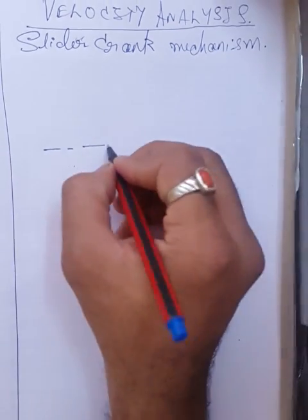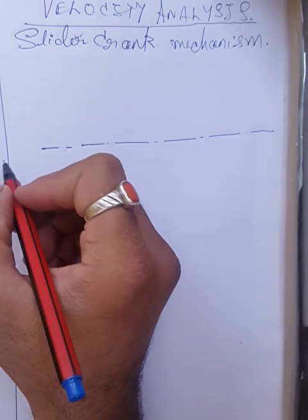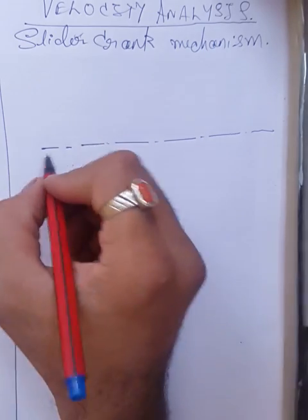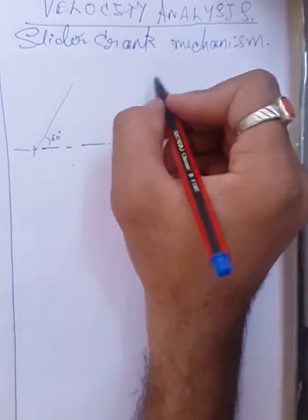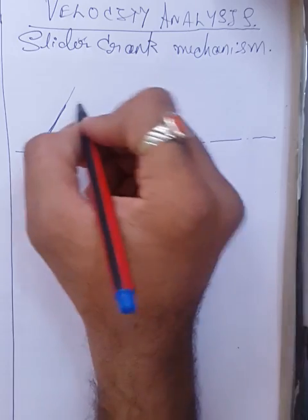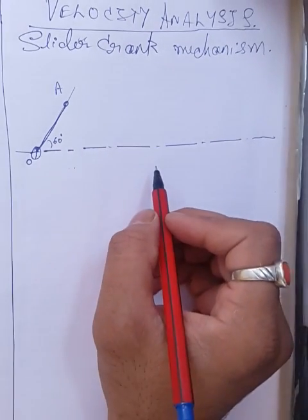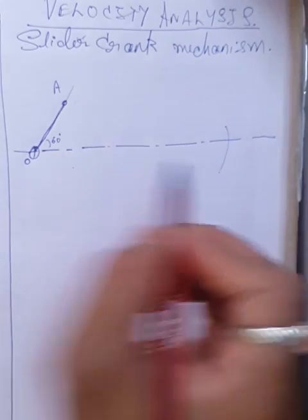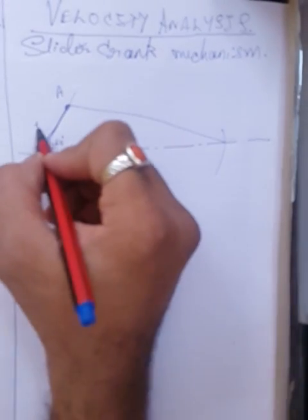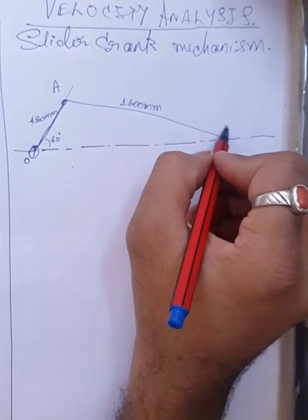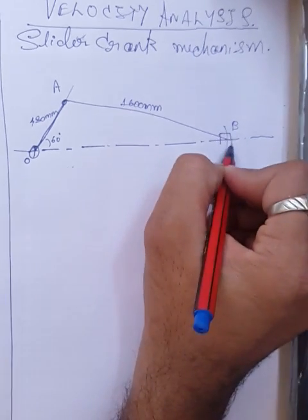The crank is 480 millimeters long and the position given is 60 degrees, so take a center, mark off a 60-degree angle, and choose an appropriate scale. Call the center point O and the end point A. The connecting rod is 1600 millimeters — take a compass from A and draw an arc to locate point B. Point B is where the slider meets the ground G.